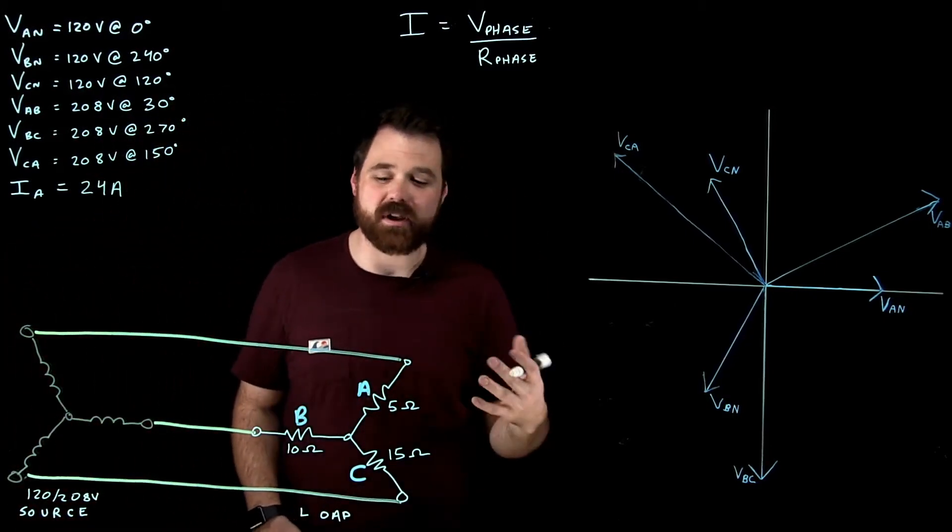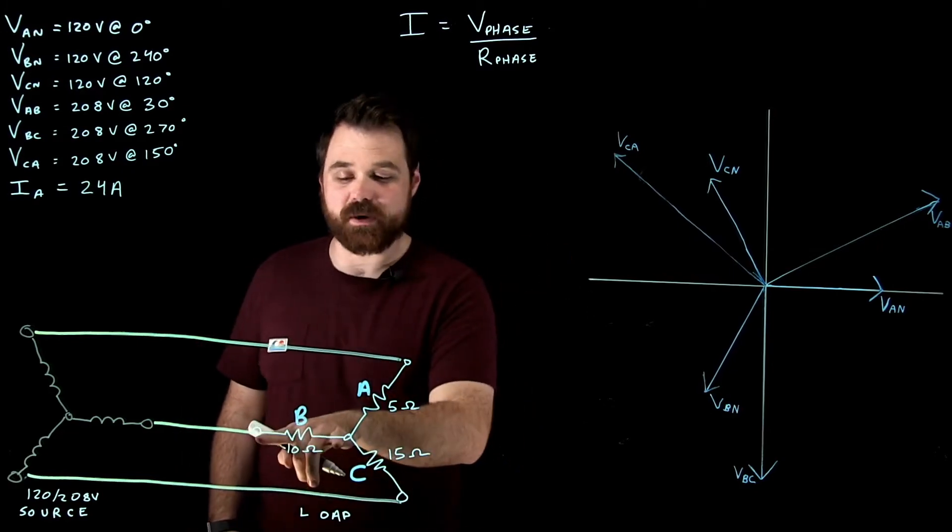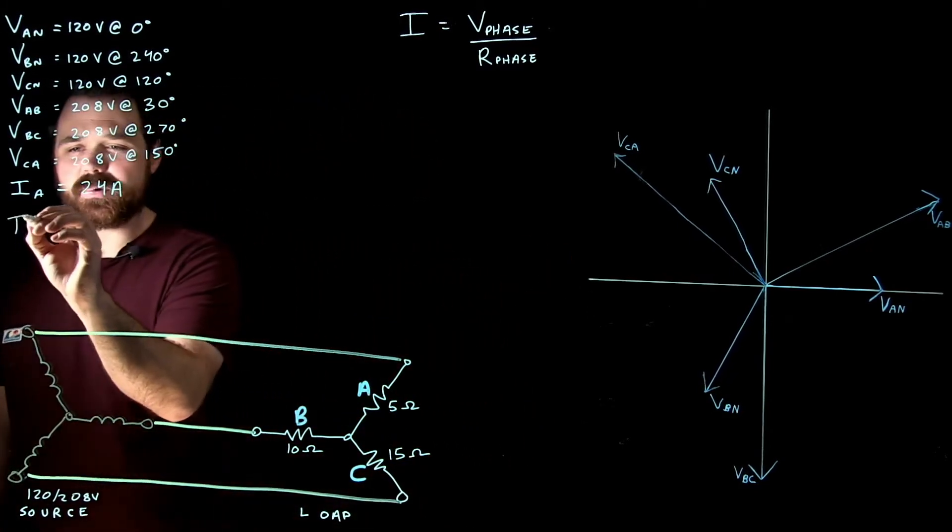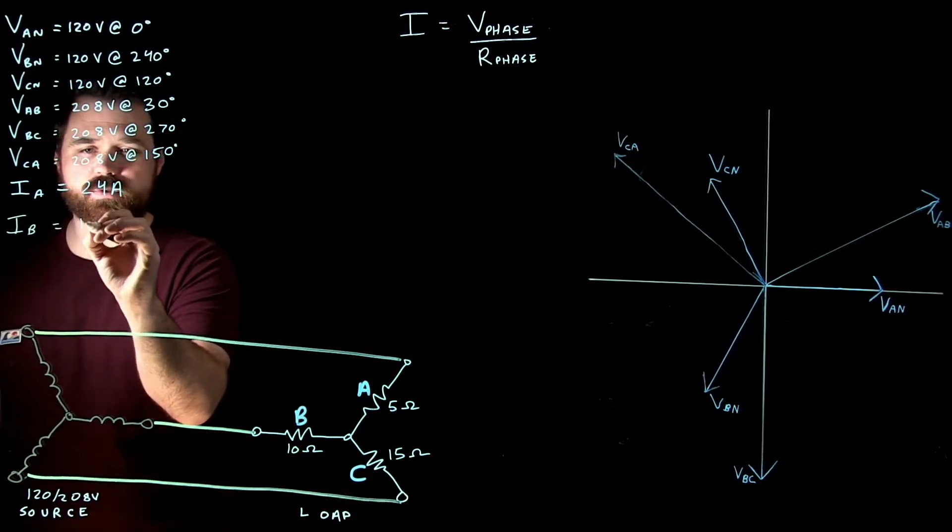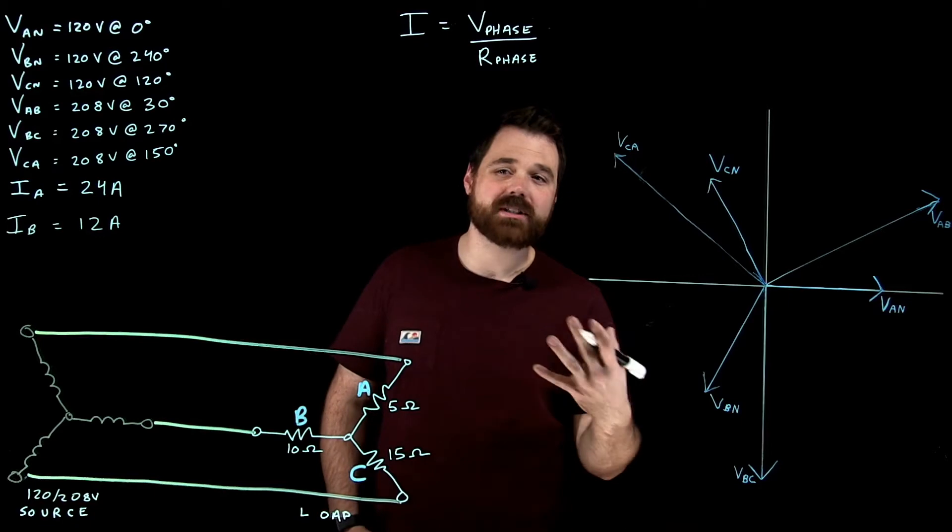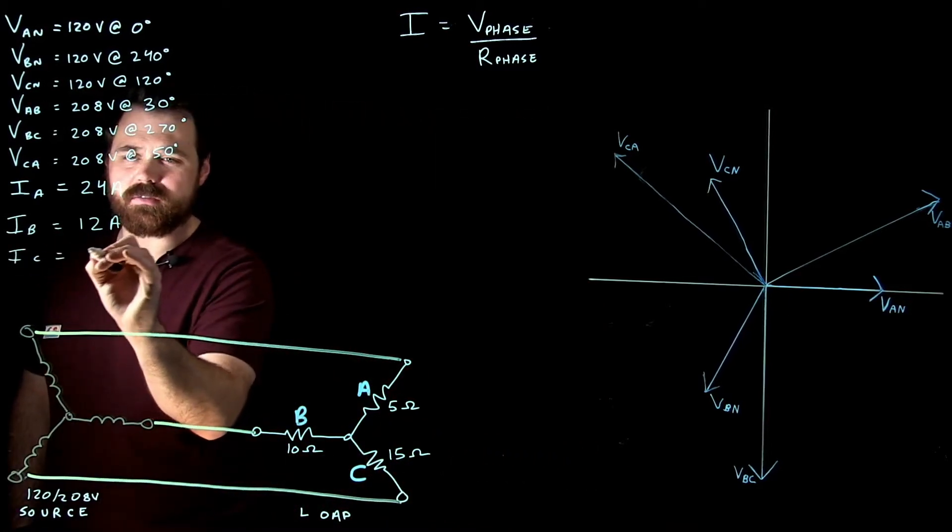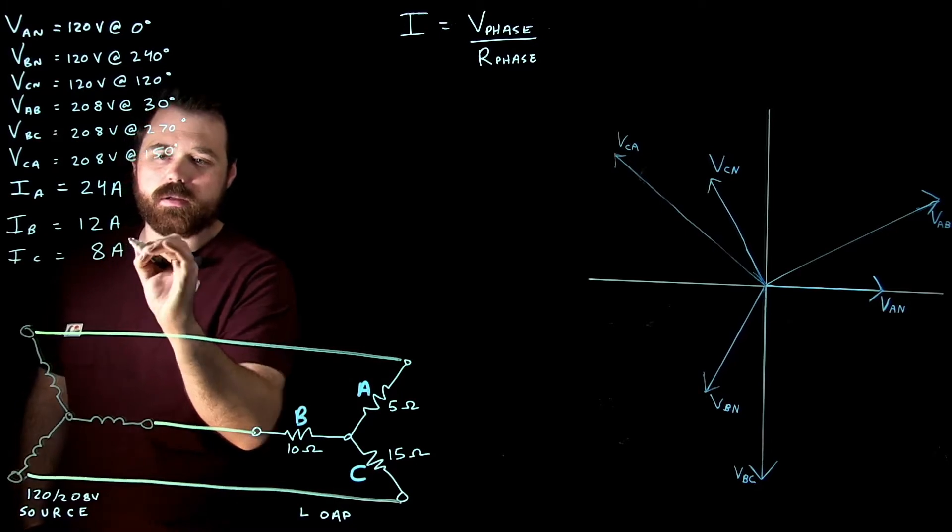Now I'm going to do the exact same thing for phase B and phase C. 120 volts divided by 10 ohms gives me a B phase current of 12 amps. And in C phase, 120 volts divided by 15 ohms is going to give me C phase current of 8 amps.